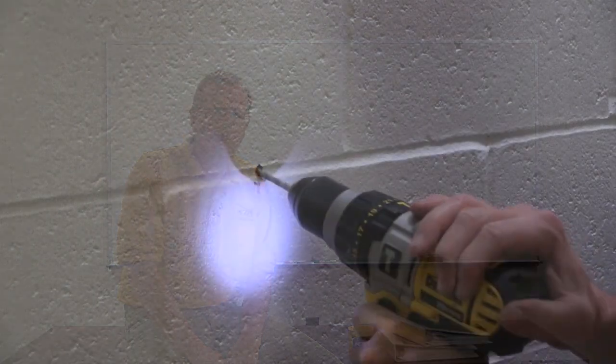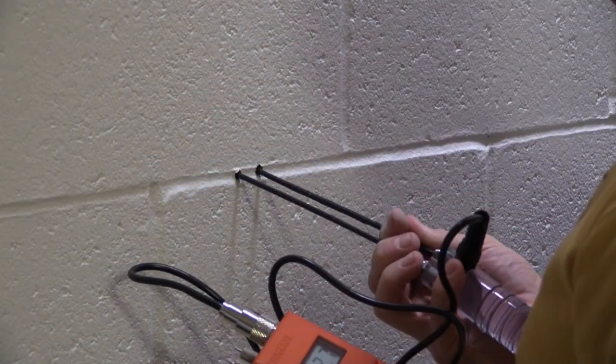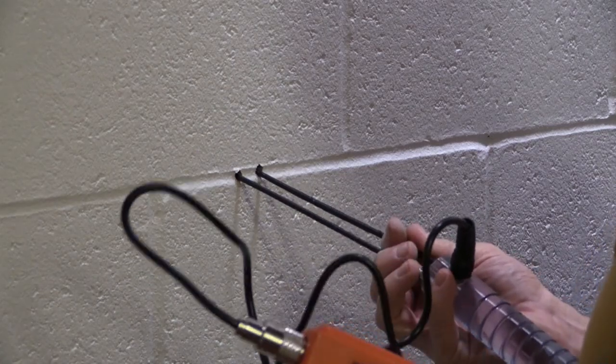Another alternative is to drill holes through the shell of CMU, for example, and insert the probes into the holes. A relative scale is used to determine moisture content. That is, specific moisture percentages are not provided.